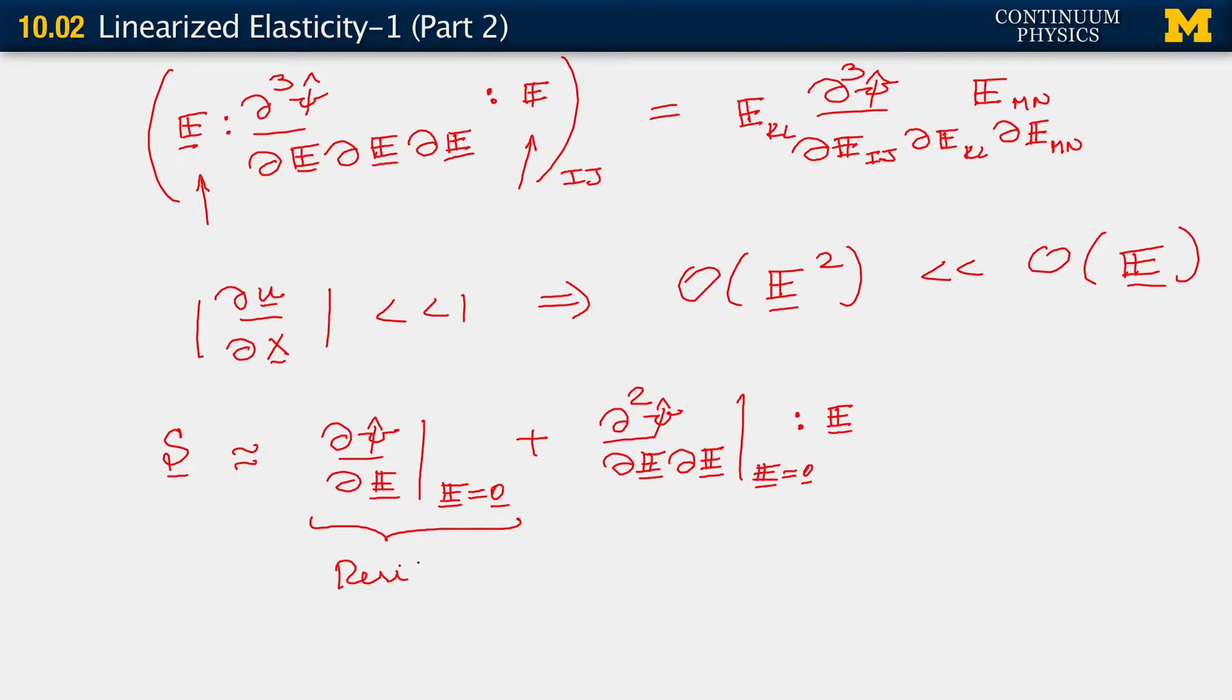Now, this term gives us the second Piola-Kirchhoff stress about zero strain. If this term is, and this term is what we usually refer to as the residual stress. If the body without any deformation still has some stress in it, then this is it. But without any strain, if there is a stress in the body, then this is it. So this term is what we call the residual stress.